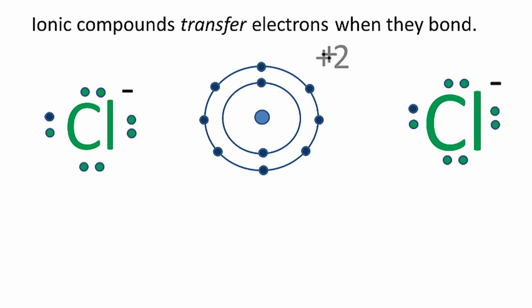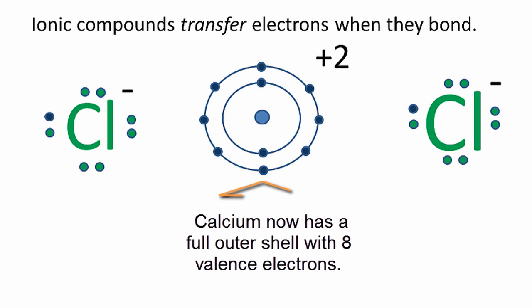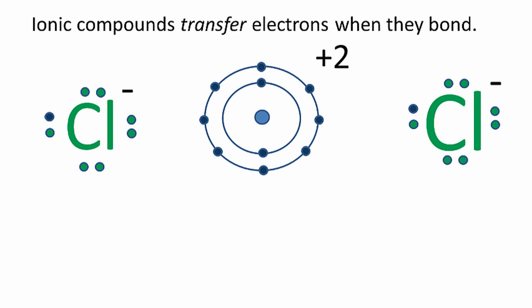And the calcium in the center, it has a plus 2, since it lost two valence electrons. But when you look at it, its outer shell is full. So when it lost those two valence electrons, the layer underneath it has 8. It has an octet. So by transferring electrons, the chlorines have octets, and the calcium also has an octet.